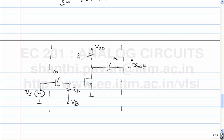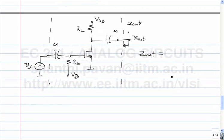What is the output impedance looking in here? The incremental output impedance Zout — how will you find it? Draw the incremental equivalent circuit.